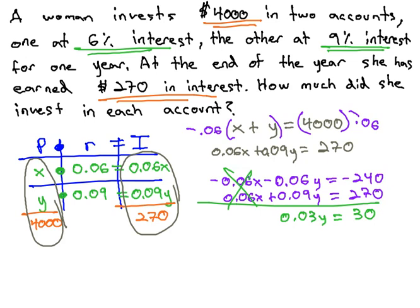Now, we simply have to divide both equations by .03, and we get our answer for y.